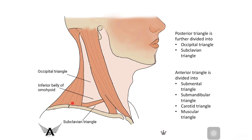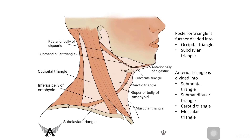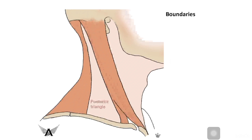The subdivisions of the posterior triangle are created by the inferior belly of the omohyoid, dividing it into the occipital triangle and the subclavian triangle. The anterior triangle is divided by two muscles: the digastric muscle and the superior belly of the omohyoid. The triangles of the anterior region are the submental triangle, the digastric triangle, the carotid triangle (named for its important content, the carotid artery), and the muscular triangle.